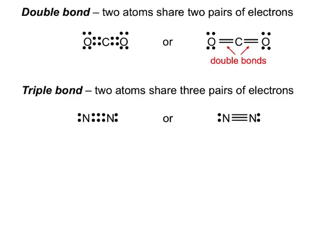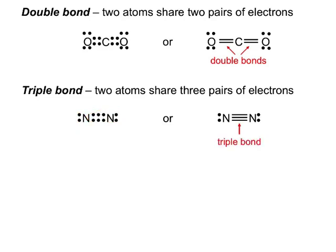You can also have a triple bond. Nitrogen exists naturally as a diatomic molecule because it can form a triple bond. In forming the triple bond, the nitrogen on the left has eight electrons and the nitrogen on the right has eight electrons. Now, there is no such thing as a quadruple bond. You can only have a single, a double, or a triple bond — no more.